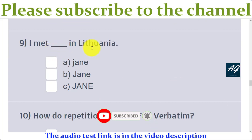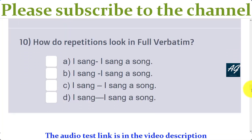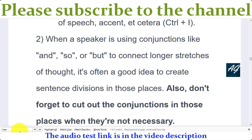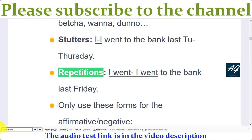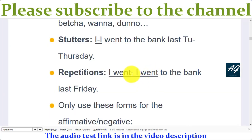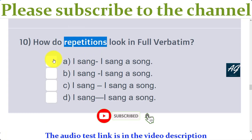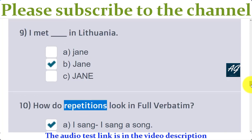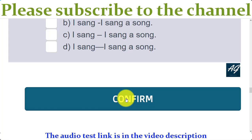The ninth question is 'I meet — I meet gang,' and B is the correct option. For the tenth question — how do repetitions look in full verb form? Copy this word and paste in the transcription guidelines. For repetition, use a single dash: 'I went —' use a single dash. This option is correct because the dash is with the first word. So the first option is correct and the other options are false.